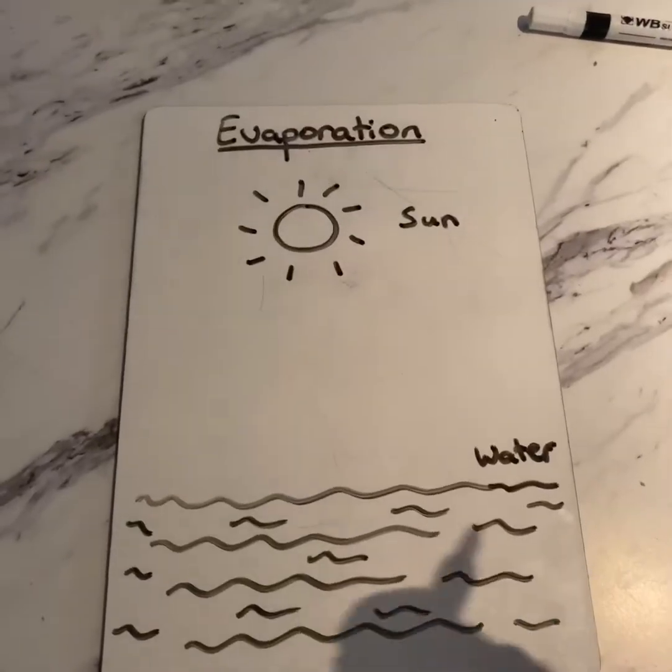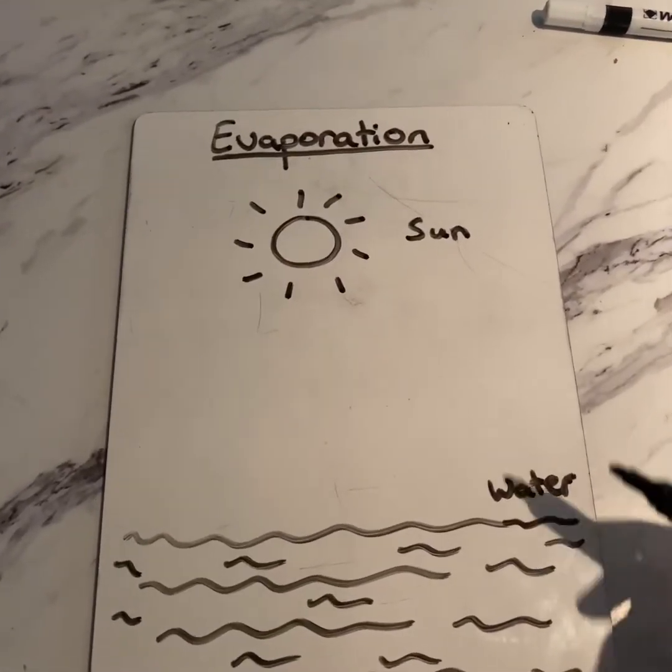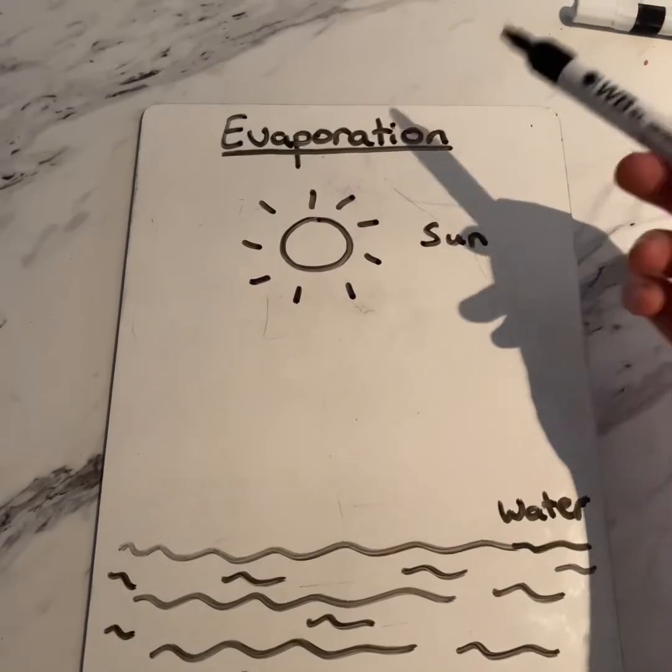Now, I know what you might be thinking: this is cool, but I thought we were learning about clouds. Well, the reason I'm looking at states of matter first is because clouds are made of water. But clouds are up in the sky — how does the water get up there? Well, it happens through a process called evaporation.